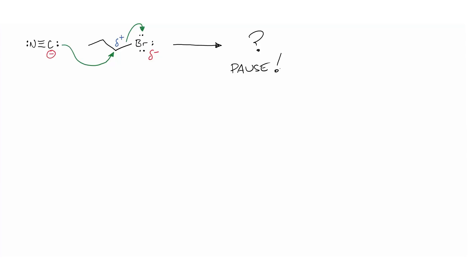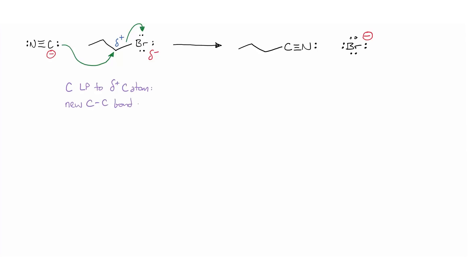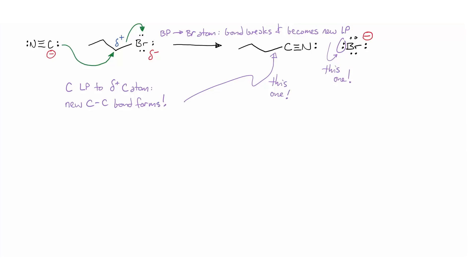Pause the video and see if you can correctly draw the structures of the products given these curved arrows — count the carbons carefully and be sure to include all necessary formal charges. The first arrow from the cyanide-carbon lone pair to the bromopropane δ⁺ carbon means a new bond forms between those two carbon atoms — that lone pair turns into this bond. The second arrow shows the carbon-bromine bond pair moving onto the bromine atom; that bond is lost and those electrons become a lone pair on the bromine. The nucleophilic carbon in cyanide had a negative formal charge, but in the product it's zero because it now has four bonds. The bromine atom becomes anionic bromide — eight electrons give it the negative formal charge.